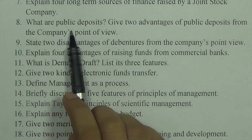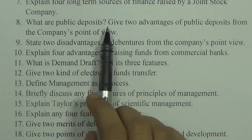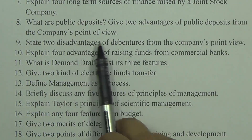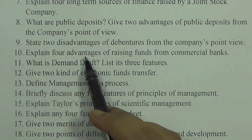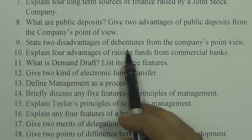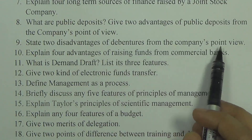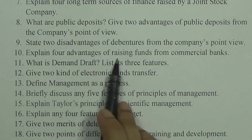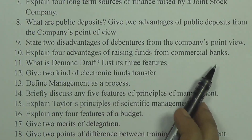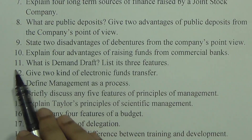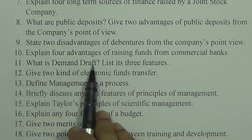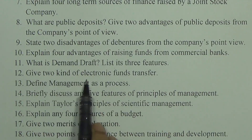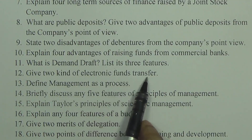Question eight: What are public deposits? Give two advantages of public deposits from the company's point of view. Question nine: State two disadvantages of debentures from the company's point of view. Question ten: Explain four advantages of raising funds from commercial banks. Question eleven: What is a demand draft? List its three features. Question twelve: Give two kinds of electronic fund transfer.